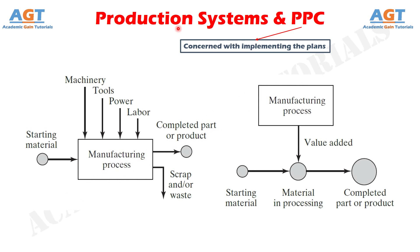Production planning and control receives data related to orders from the marketing department. A production plan based on marketing and production data is prepared in production planning and control. This production plan provides a clear idea about utilization of manufacturing resources for production. The prepared production plan is then delivered to the production department, which manufactures products according to that plan.